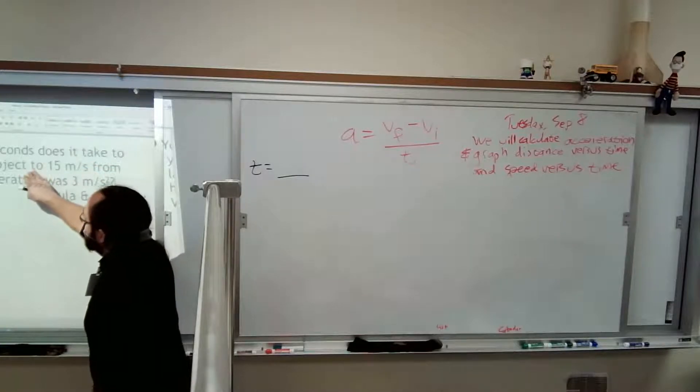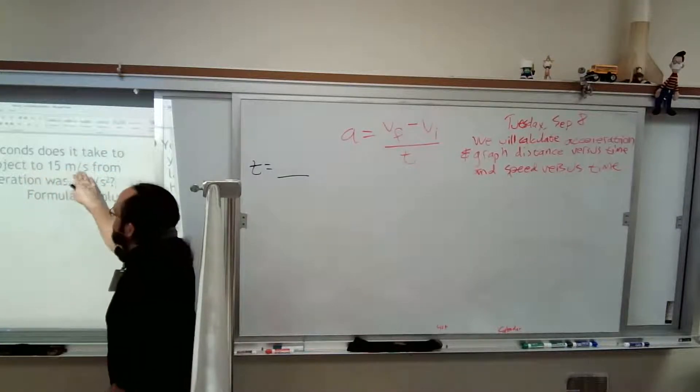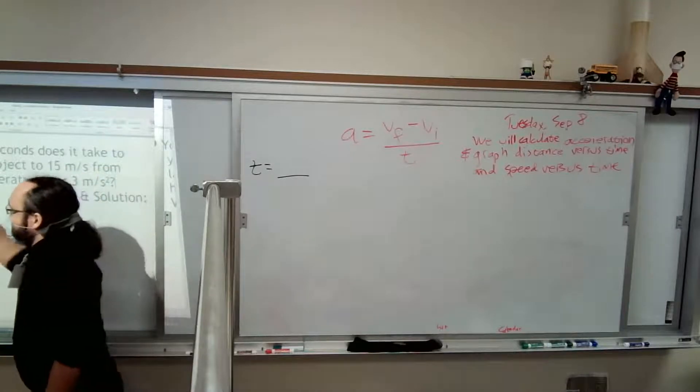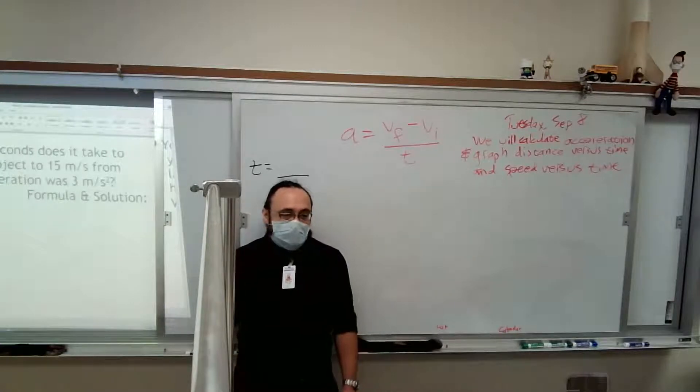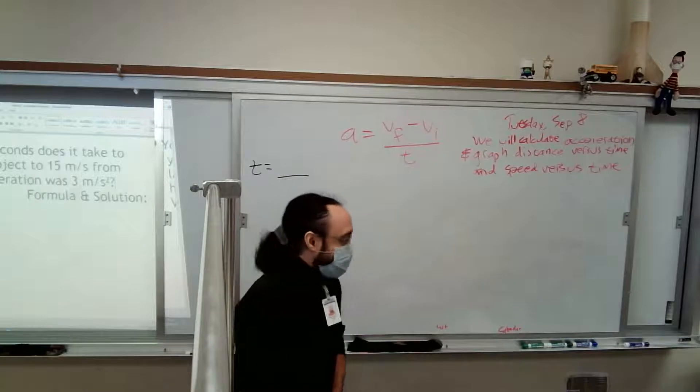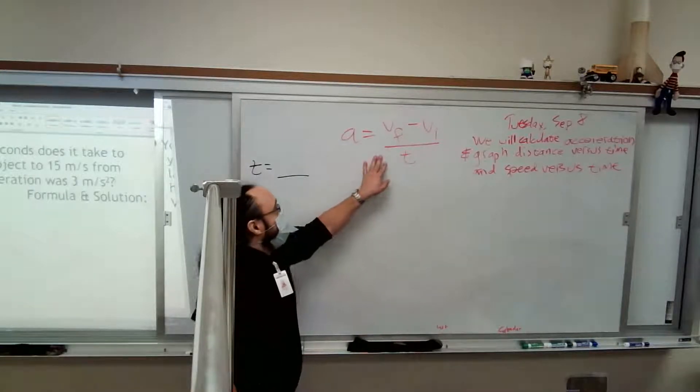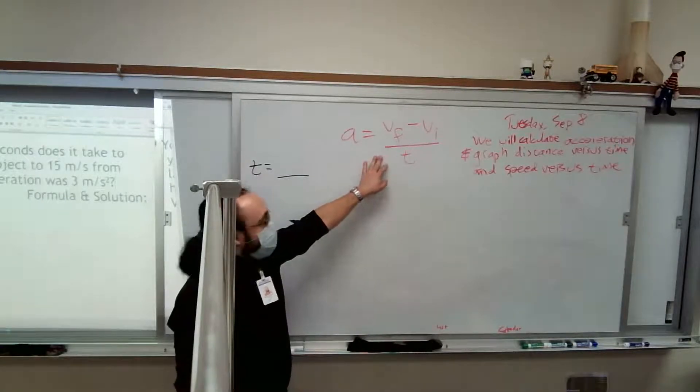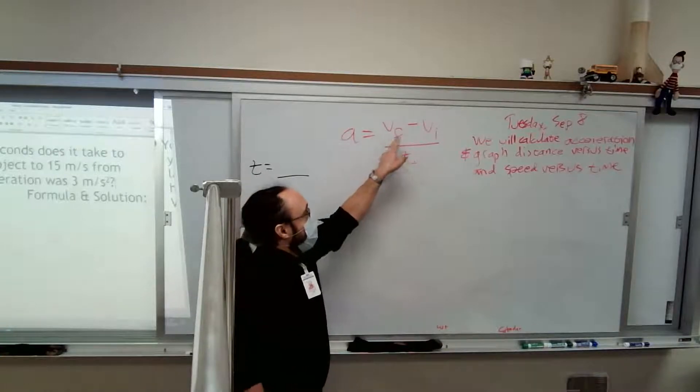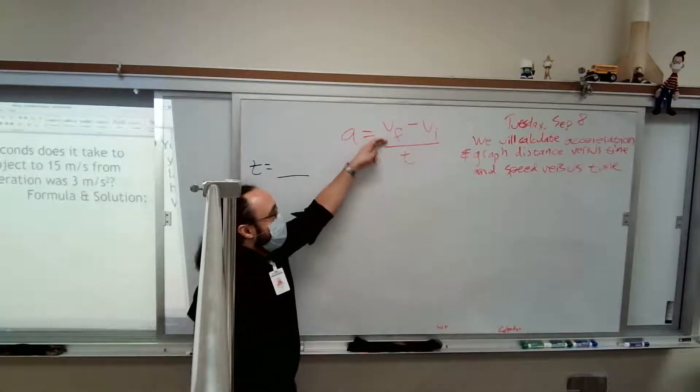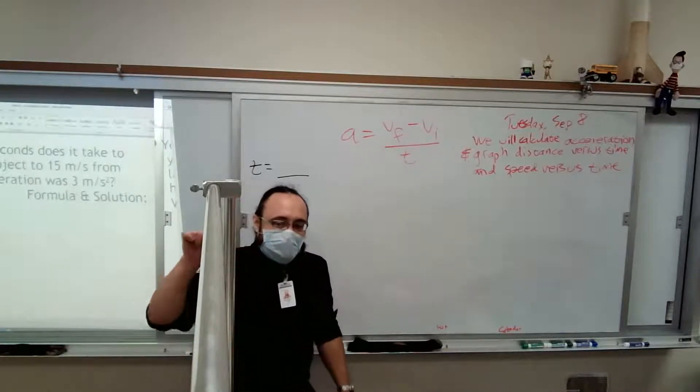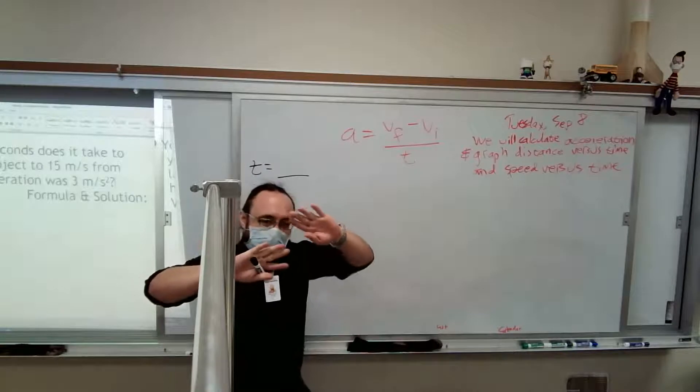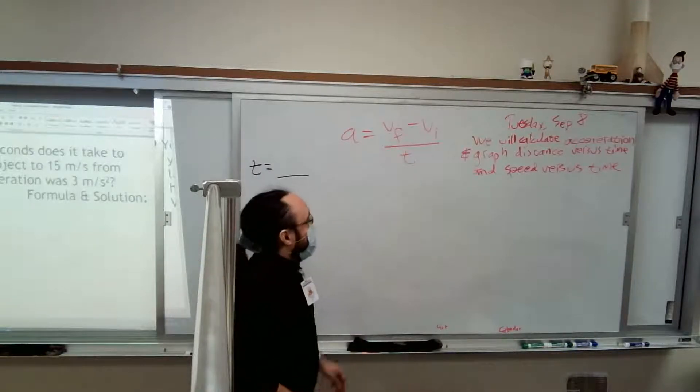It says to accelerate an object to 15 meters per second from rest. So it gives us two velocities there. With acceleration you're always going to have two velocities because there's changing velocity. That's what acceleration is. Here's our formula. Acceleration is final velocity minus initial velocity over time. This f is in the subscript here. If you're writing this on a line, the v goes on the line and the f goes below the line.